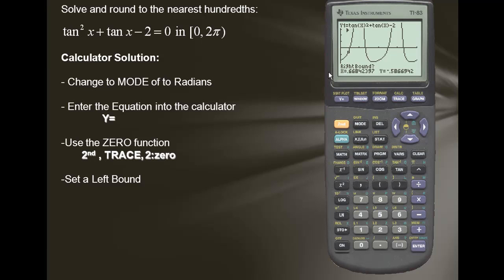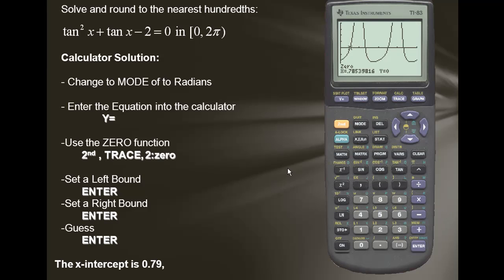Now we're asked for a right bound. We'll move our cursor to the right of our zero. We'll press enter. Notice that a sideways triangle now appears to the right of your zero. Now the calculator asks for a guess. For guess we simply press enter. The x-intercept is the solution and we will round this to 0.79.